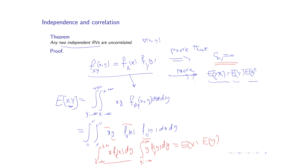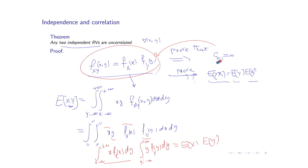Now the question is: if the covariance is zero, can we conclude that the variables are independent? Of course not. Independence is a very, very strong condition, while being uncorrelated is a weaker one. Being uncorrelated is a much weaker constraint and condition than independence.